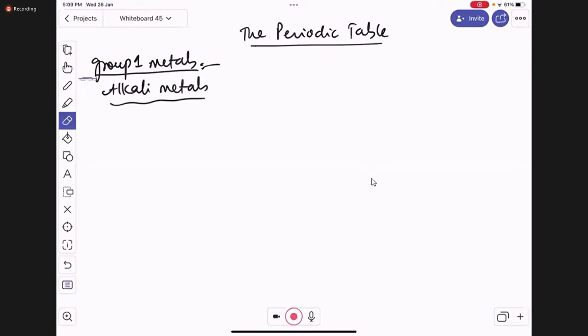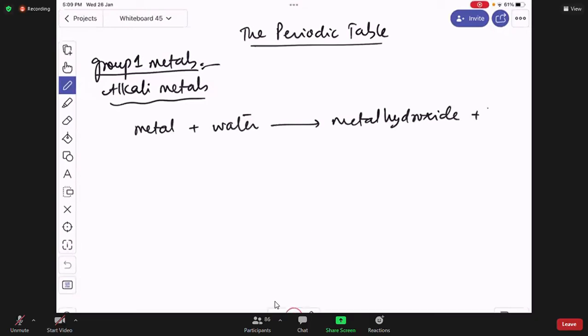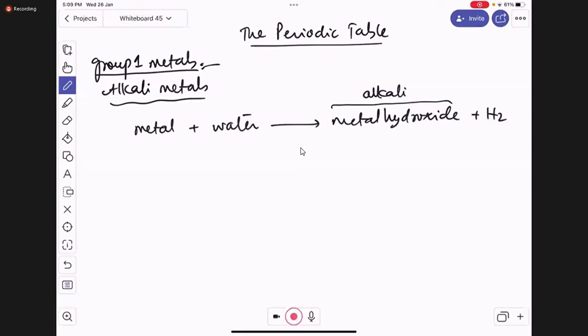If you remember the reaction when I said that these metals react with water, they give you metal hydroxide and hydrogen gas. These metal hydroxides are the alkalis. The first group hydroxides are alkalis. Since these metals react with water and give alkalis, they're simply called alkali metals.